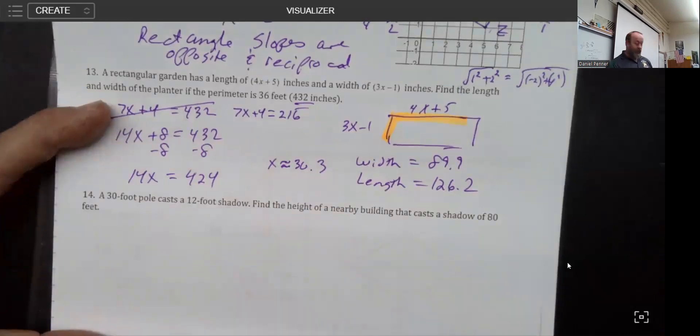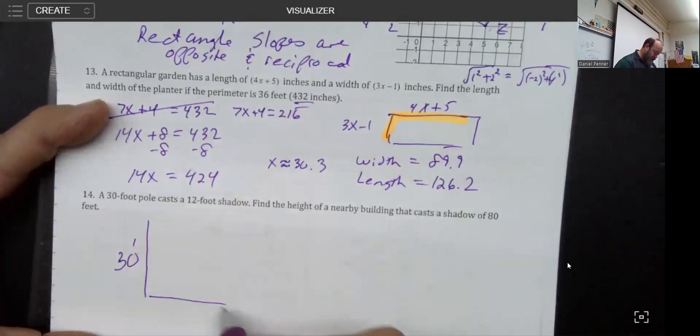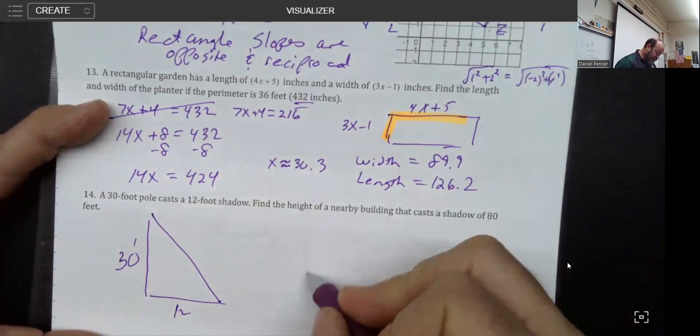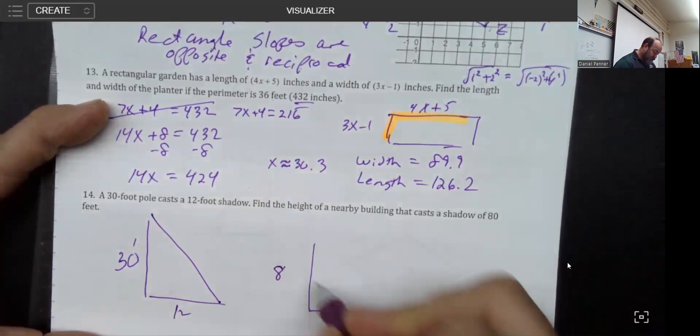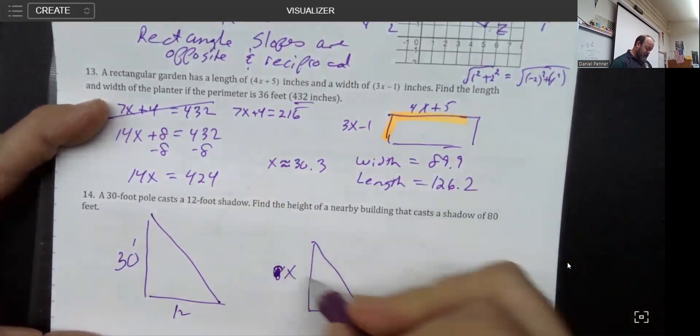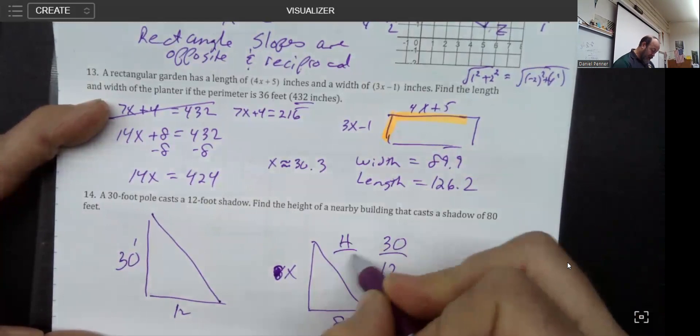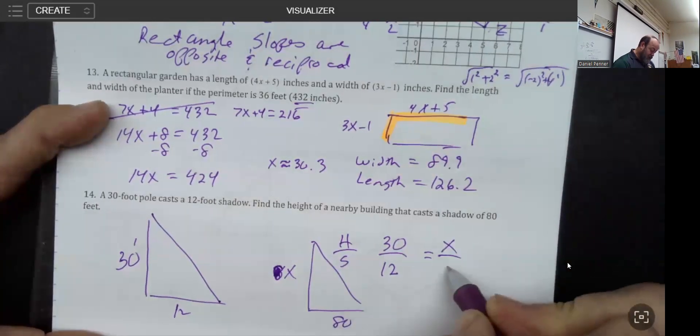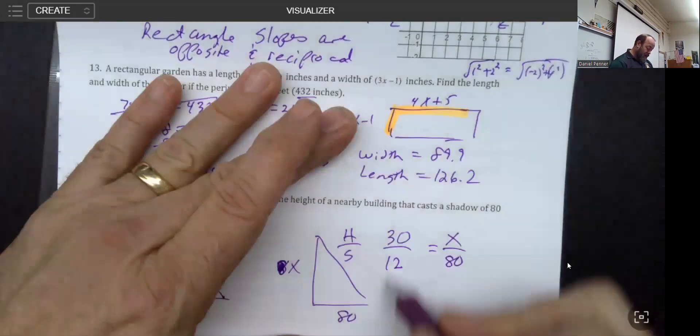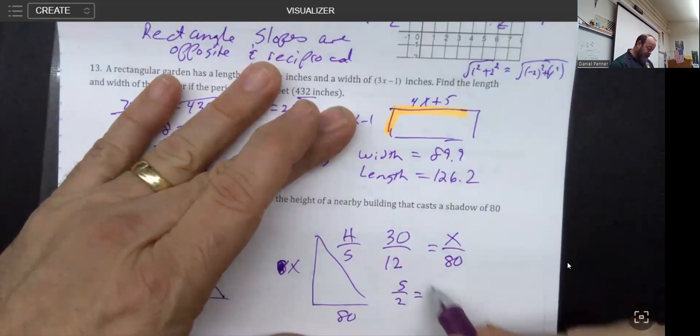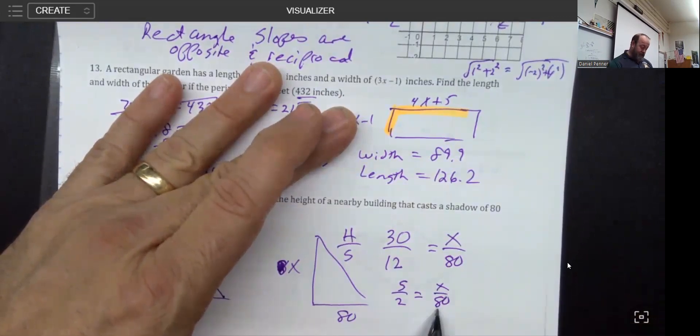Our last little problem is here. Finding a little thing about similar triangles. I got a 30-foot pole here casting a 12-foot shadow down here, and then a building that is 80-foot tall. Wait, find the height of the building that casts an 80-foot shadow. What I don't know is what this is because I know the shadow. So I could say the height is to the shadow as the height is to the shadow. The principle that I kept saying is we always want to reduce these fractions if we can.